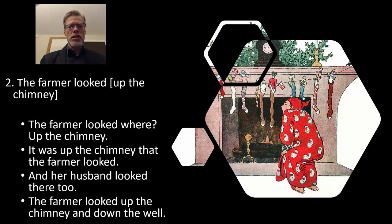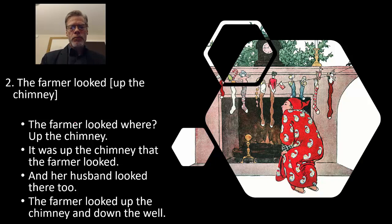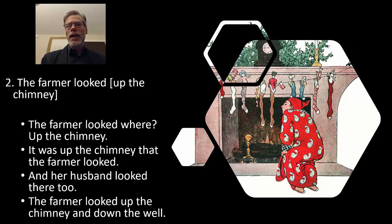Now let's look at a similar preposition phrase: 'the farmer looked up the chimney.' Question test: The farmer looked where? Up the chimney. That sounds pretty good. It-cleft: It was up the chimney that the farmer looked. Yes. Proform: Her husband looked there too, meaning her husband looked up the chimney too — sounds good. Conjunction: The farmer looked up the chimney and down the well. Yes. So we can comfortably say up the chimney is forming a constituent in this sentence.